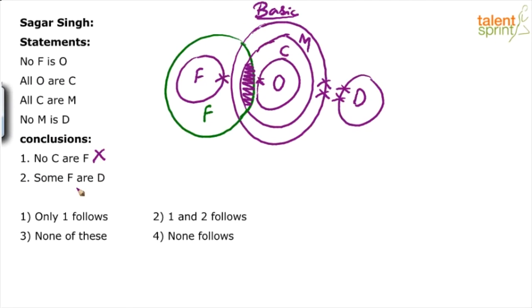Next one: some F are D. Now you have to forget about this green colored F because that was drawn as a special case. Look at the original F. The conclusion is some F are D. Compare F with D. As per the basic diagram, F and D do not overlap at all. So can we say some F are D? No. In the basic diagram itself, it fails.